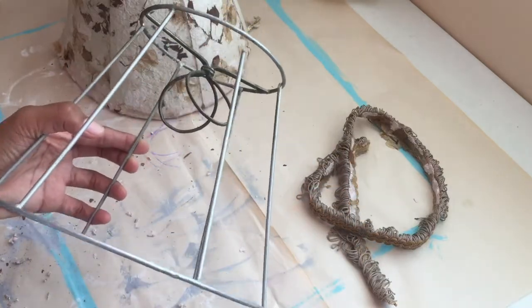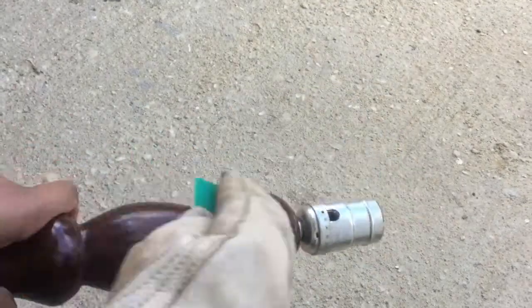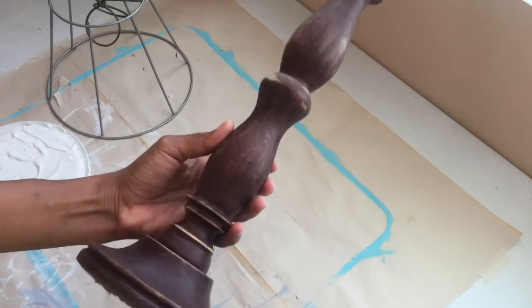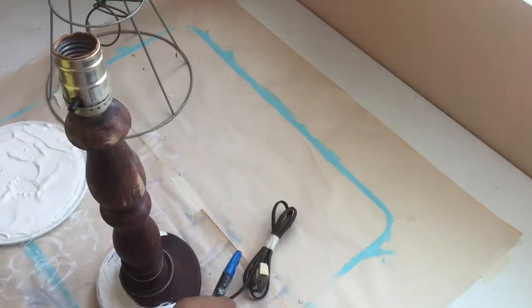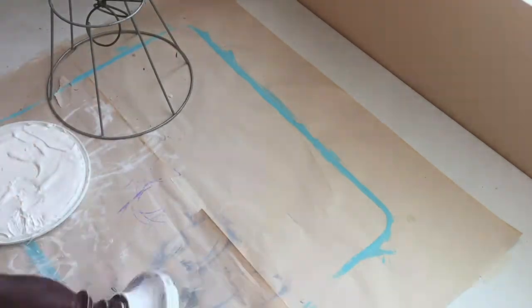For the lampstand, I'm just giving it a light sand on the surface to take off the gloss so it can take the paint. And since I'm trying to make this lamp look light and airy, I'm going to give it some white paint until you can't see the dark stain beneath it anymore.